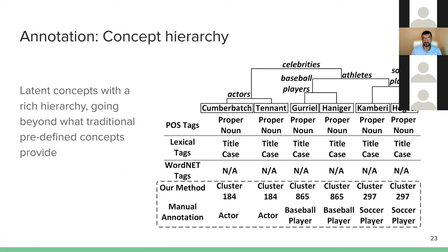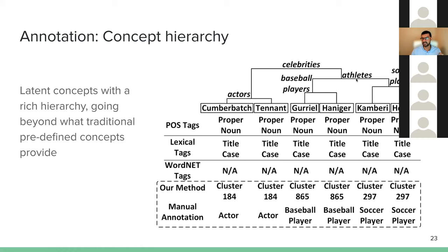This is another way to look at the concept hierarchy we preserve in annotation. Consider three clusters — 184, 865, 297 — each with two words. We can see all these words are proper nouns, which is the information you can get from human-defined concepts. WordNet doesn't have named entities, so that's the maximum information we can get from human-defined concepts. How we annotate: we preserve all the information — these are actors, who are celebrities, who are players. A person analyzing this dataset can analyze at any level of the annotation.